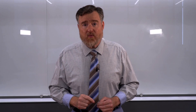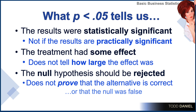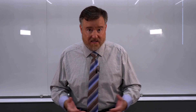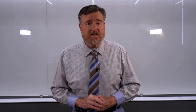But that information is not going to come from a significance value. A p-value less than 0.05 tells us that the treatment had some effect, but it doesn't tell us how large the effect was. A statistically significant finding tells us that the null hypothesis should be rejected, but it does not prove that the alternative hypothesis is correct or that the null hypothesis was false — because we already know that the null hypothesis is false. We are getting very limited information from statistical significance.